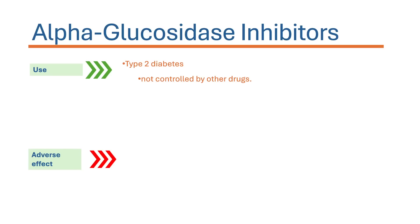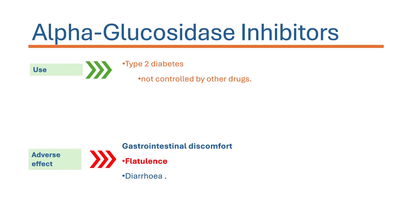Regarding the adverse effect profile, since these drugs act on the GI bacterial enzyme system, they are more prone to cause gastrointestinal discomfort. Specifically, they can cause bloating sensation and flatulence, which is the characteristic side effect of alpha glucosidase inhibitors. Patients are also more prone to diarrhea.